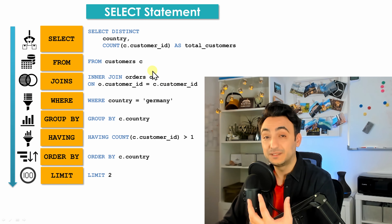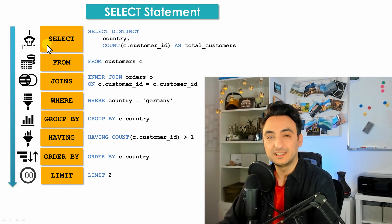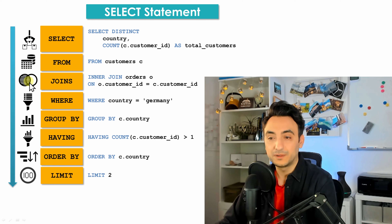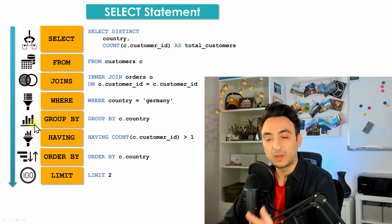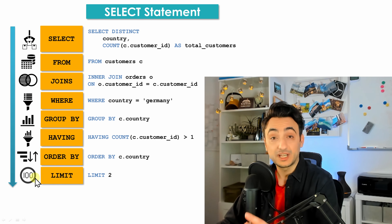Each clause has its own definition and function. We have SELECT to select our columns, FROM to select the tables we need, JOINs to connect two tables together, WHERE to filter our data, GROUP BY to aggregate data, HAVING as another way to filter data, ORDER BY to list our results, and LIMIT to limit our results.